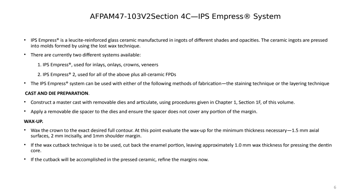When talking about opacity, we're talking about how transparent the material is — how much light can pass through it. All-ceramic materials tend to be somewhat opaque in their composition, but manufacturers now offer different formulations allowing more translucency. We can find different levels of opacity: low translucency, high transparency, medium opacity, or high opacity. Selecting the correct shade and opacity or translucency level for the all-ceramic framework is very important.